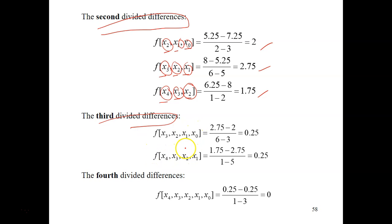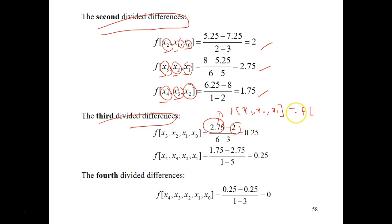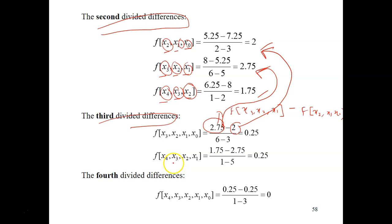The third divided differences use groups of four: the first is x0, x1, x2, x3 and the second is x1, x2, x3, x4. The values come from the second divided differences computed earlier. For the first third divided difference, take f[x1,x2,x3] minus f[x0,x1,x2], divided by x3 minus x0 — that is 6 minus 3. Then calculate the second third divided difference involving x1, x2, x3, and x4 on your own.